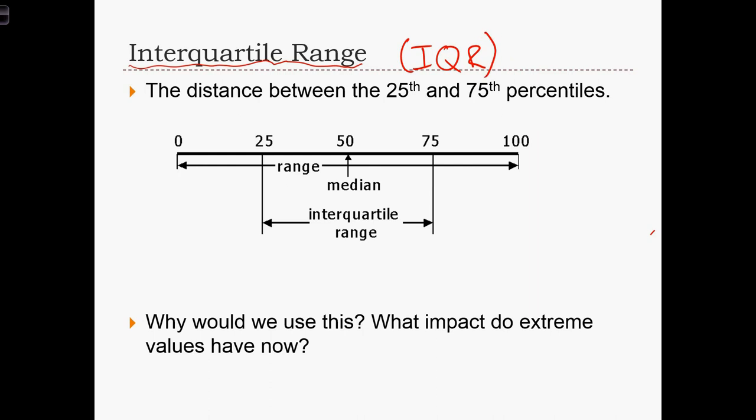When we split a distribution up into quartiles, we are doing it in such a way that there's an even number of observations in each of these ranges.